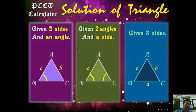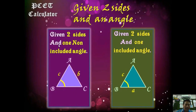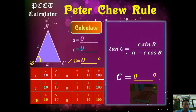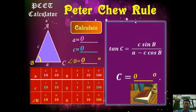The complete picture of solution of triangle is divided into three categories: knowing two sides and an angle; knowing two angles and one side; and knowing three sides. Looking at the first — knowing two sides and an angle — this page divides into two sub-categories: knowing two sides and the non-included angle, and knowing two sides and the included angle. Let's see the second: knowing two sides and the included angle to find the non-included angle. We can see that PCET Calculator applies Peter Chiu Rule. We just need to input the information and press calculate to get the answer.